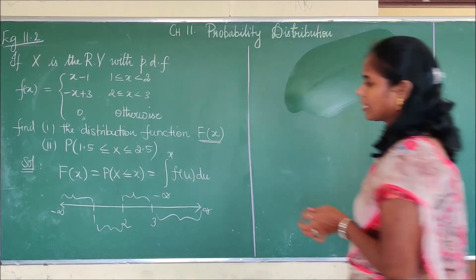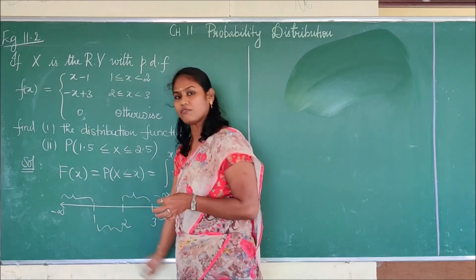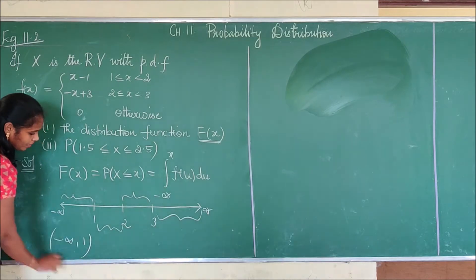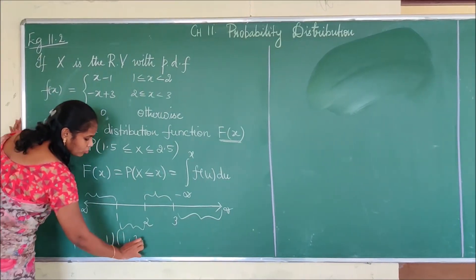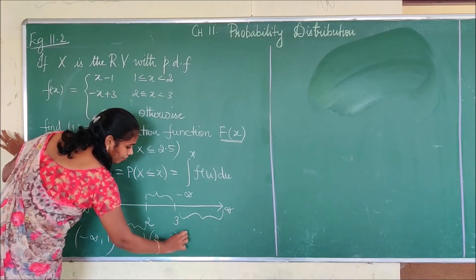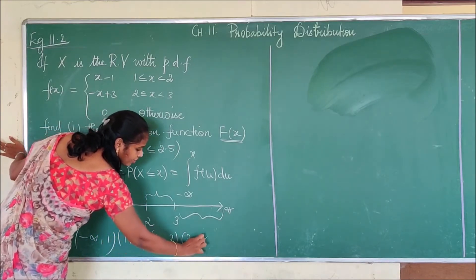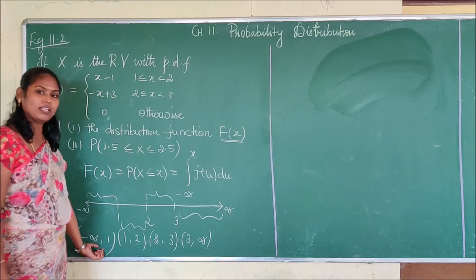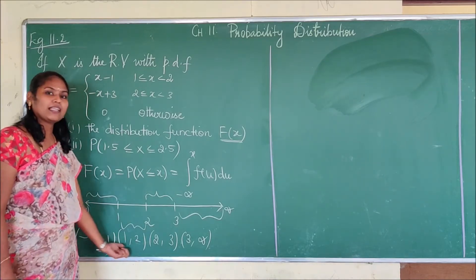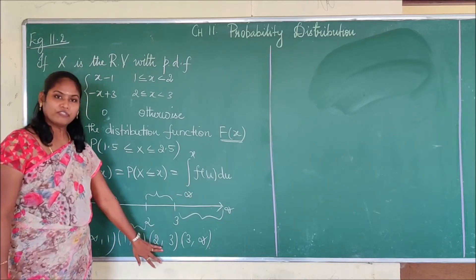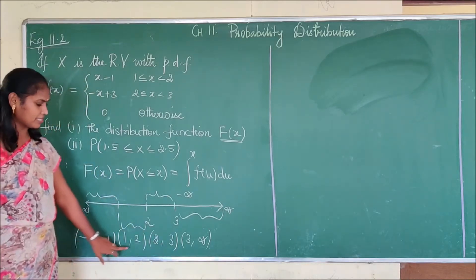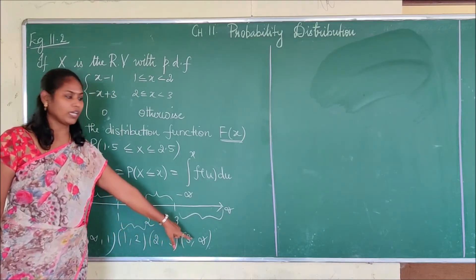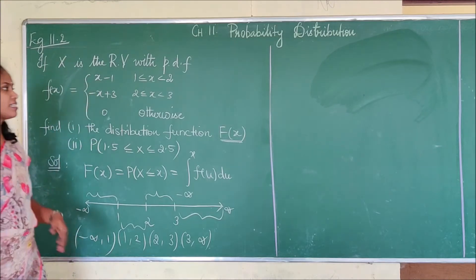For a continuous random variable, instead of summing over individual values, we integrate over an interval. My intervals are: minus infinity to 1, 1 to 2, 2 to 3, and 3 to infinity. For the second interval, I add the first interval to it; for the third, I add both first and second; and for the final interval, I add all previous ones.